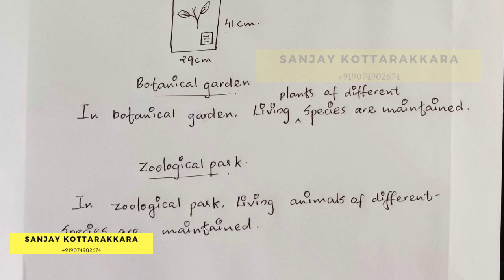Let's define a museum. In a museum, dead plant and animal specimens are maintained. That is the definition of a museum — dead plant and animal specimens are maintained.